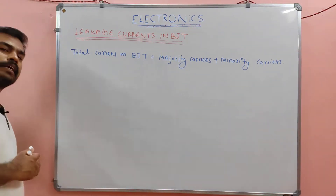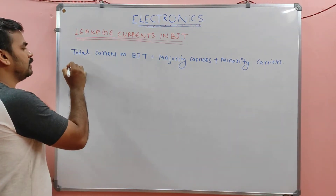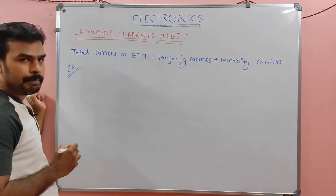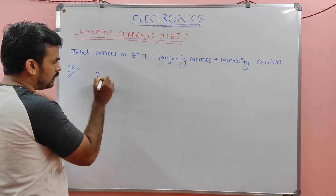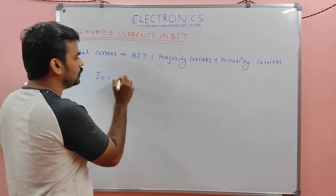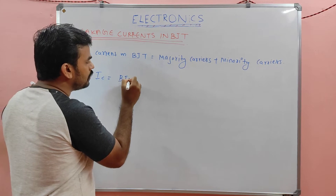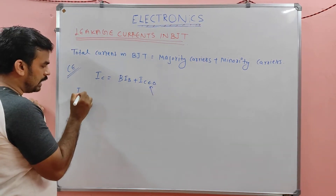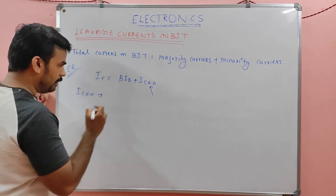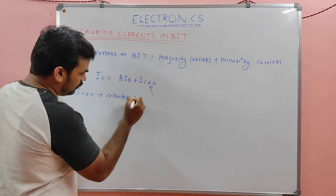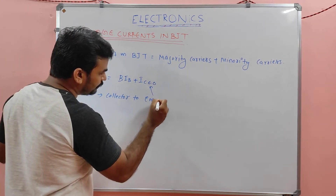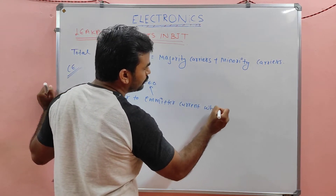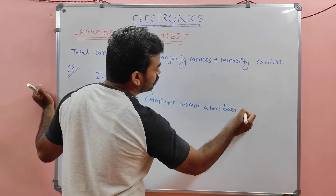Let's take the common emitter configuration as an example. In a common emitter configuration, the total collector current is: IC = β·IB + ICEO. This ICEO is called the collector-to-emitter current when the base is open.